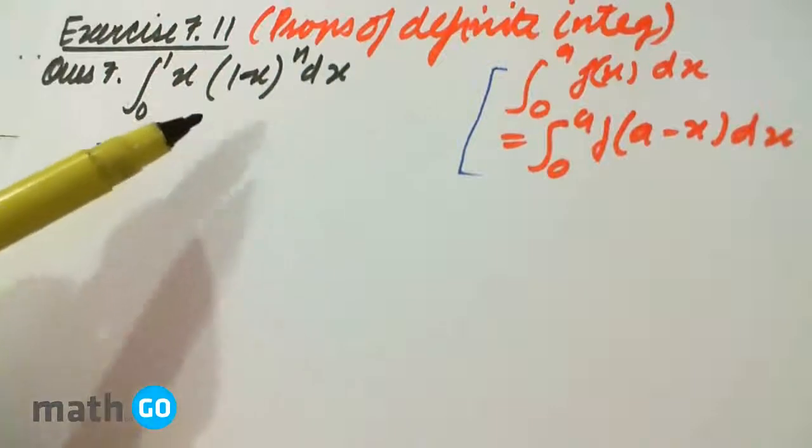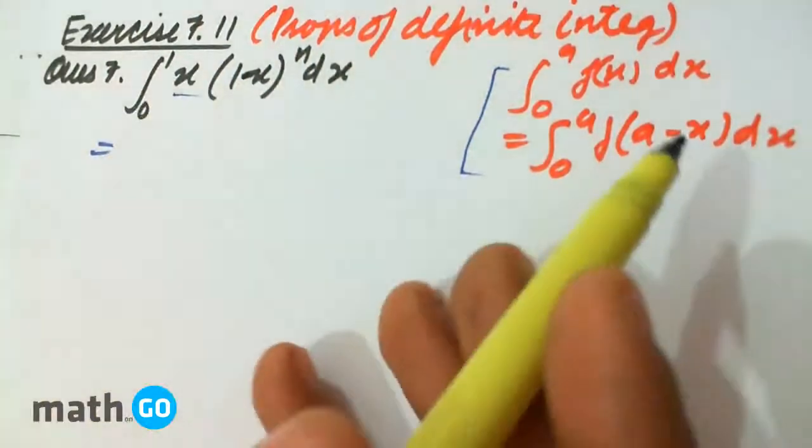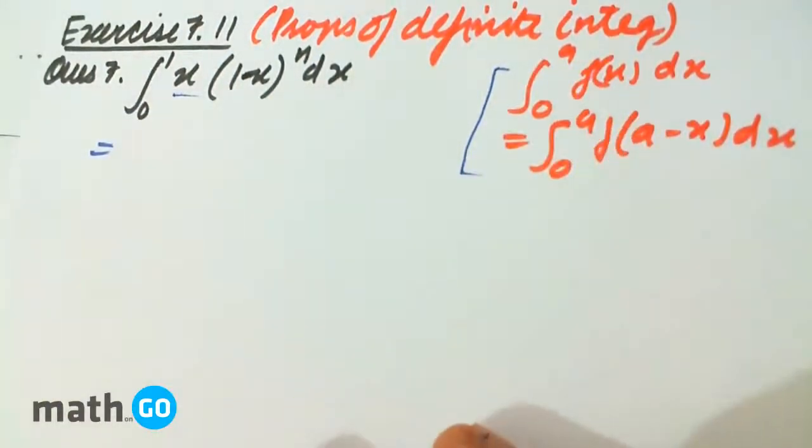Obviously, it's not easy to calculate the integral of 1 minus x to the power n when we have x beside it. So this property comes to the rescue.